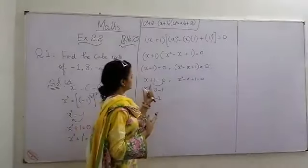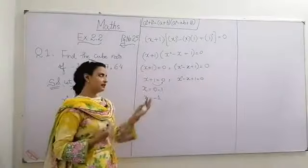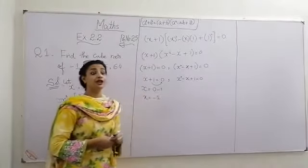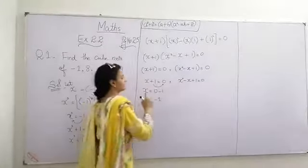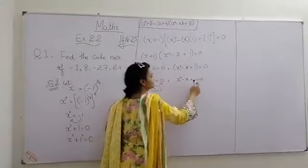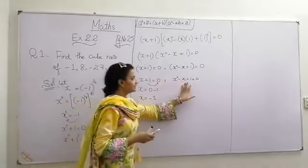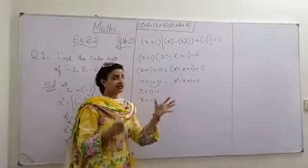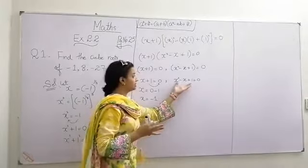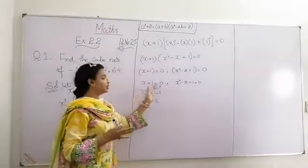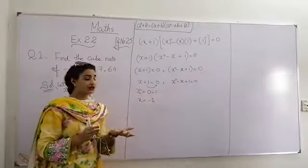Why am I saying this is an equation? Because of the equality sign. If the equality sign is present in the algebraic expression, it is an equation. Algebraic expression means the symbols and the variables are combined together — this combination is called the algebraic expression. And if the equality sign is also present, then this algebraic expression is called the equation.